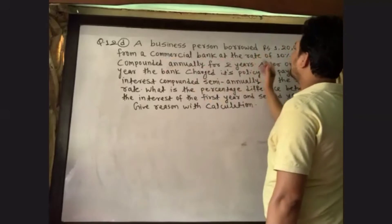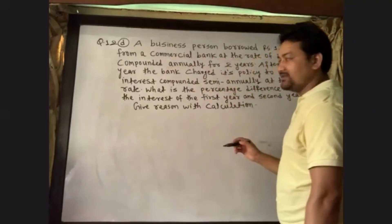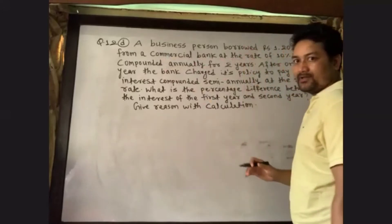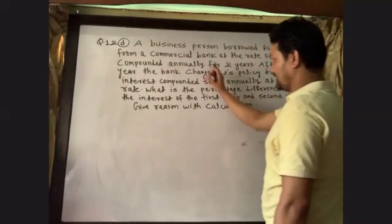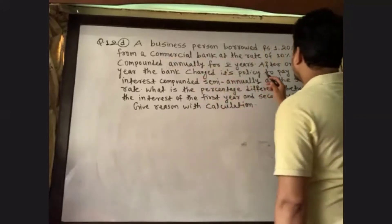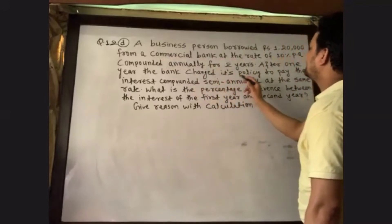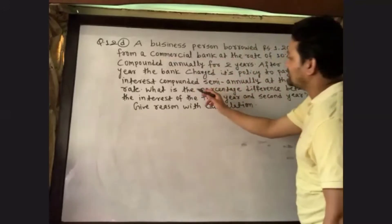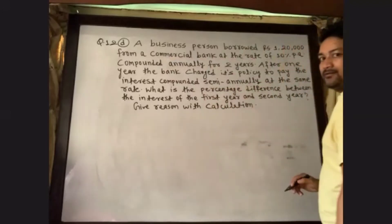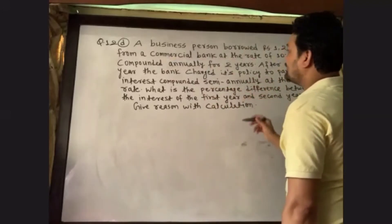You will start to find the compound interest, because the question might change. Look at the second sentence — after one year, the bank changed its policy to pay the interest compounded semi-annually at the same rate. So after one year, the bank policy changed.